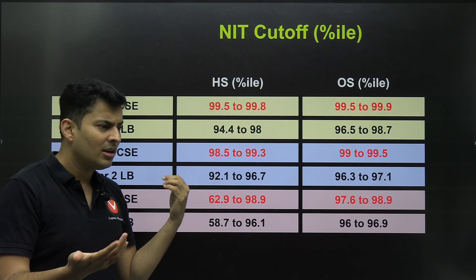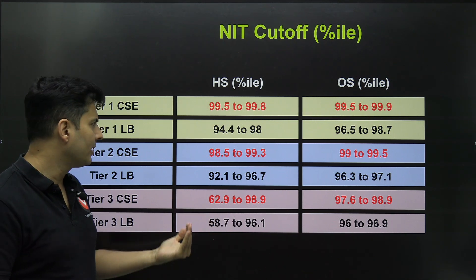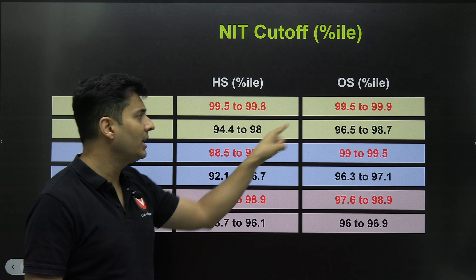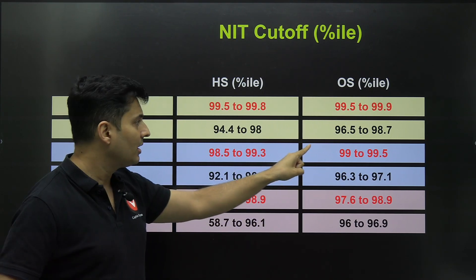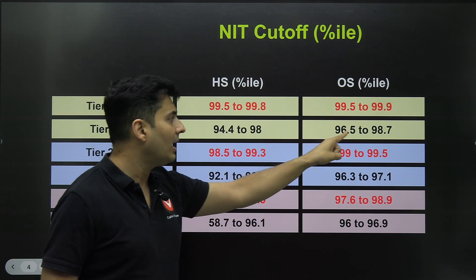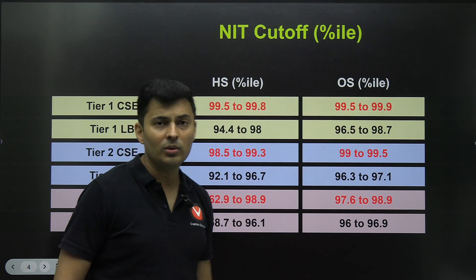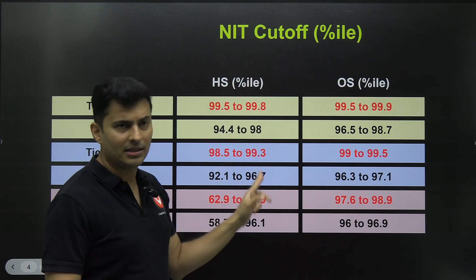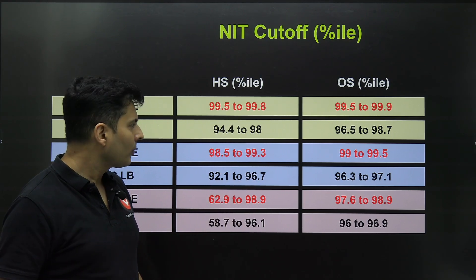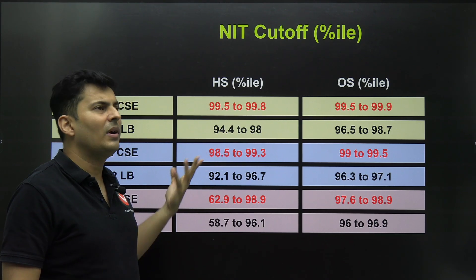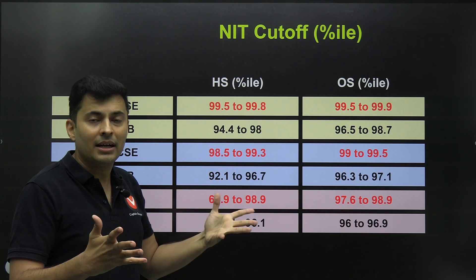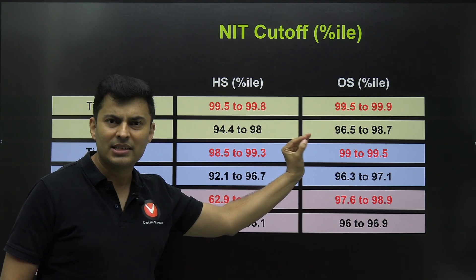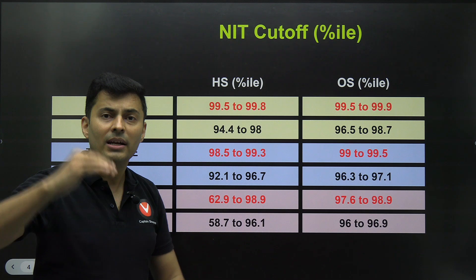If you talk about the lowest branch — say in Surat, Kharagpur, or Trichi you want civil or metallurgy — then you will need anywhere between 94 to 98 for home state, and for other state students around 96.5 to 98.7. You can see 98 is like a safe score. There's no guarantee at 95. So 98 to 98.9 percentile will definitely be a safe score.